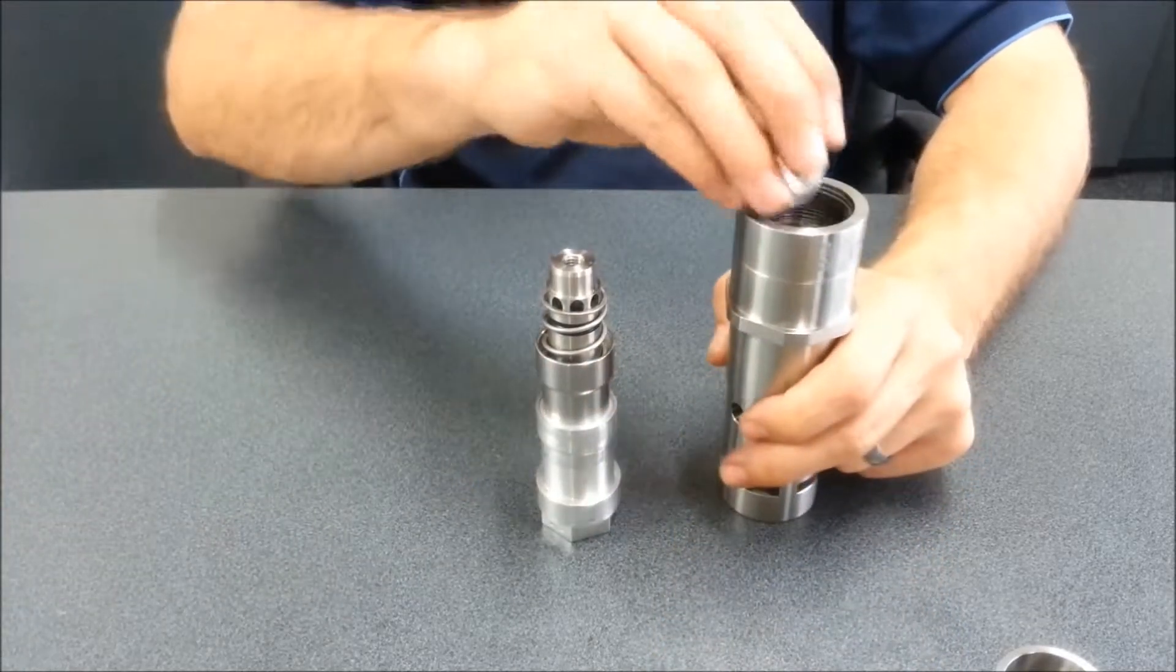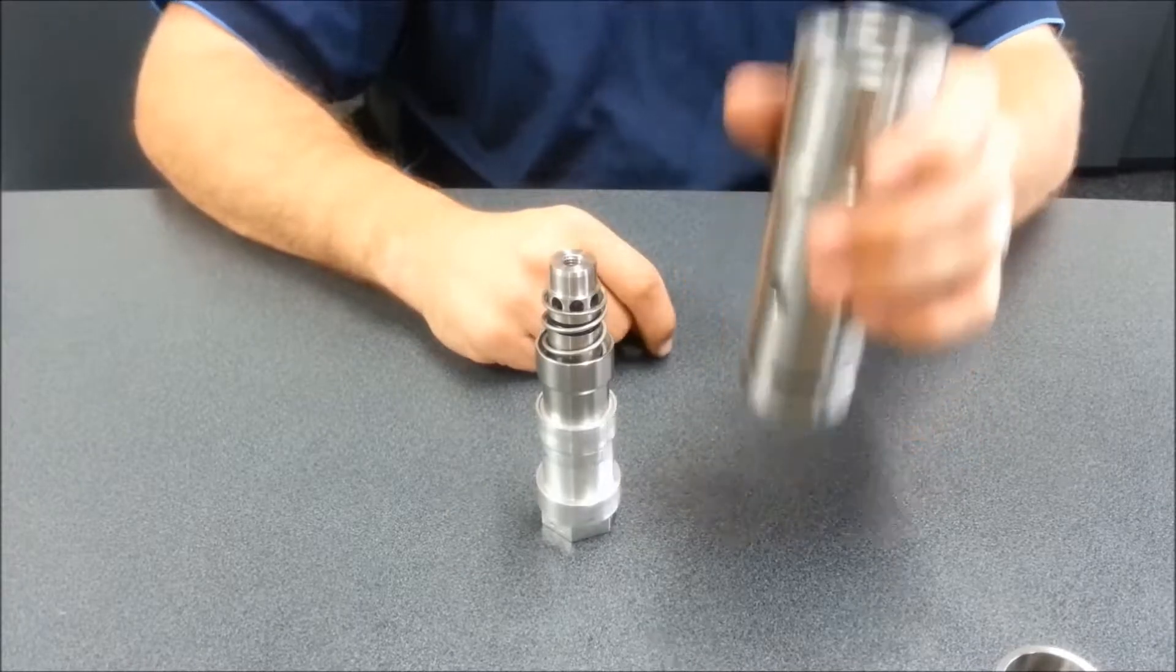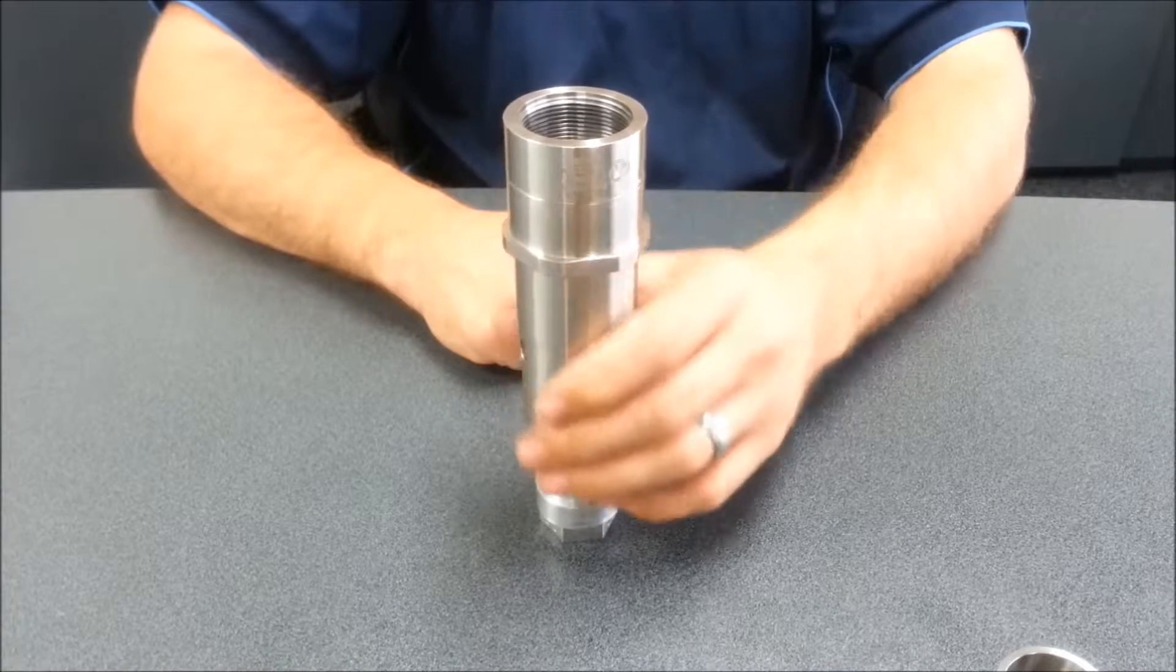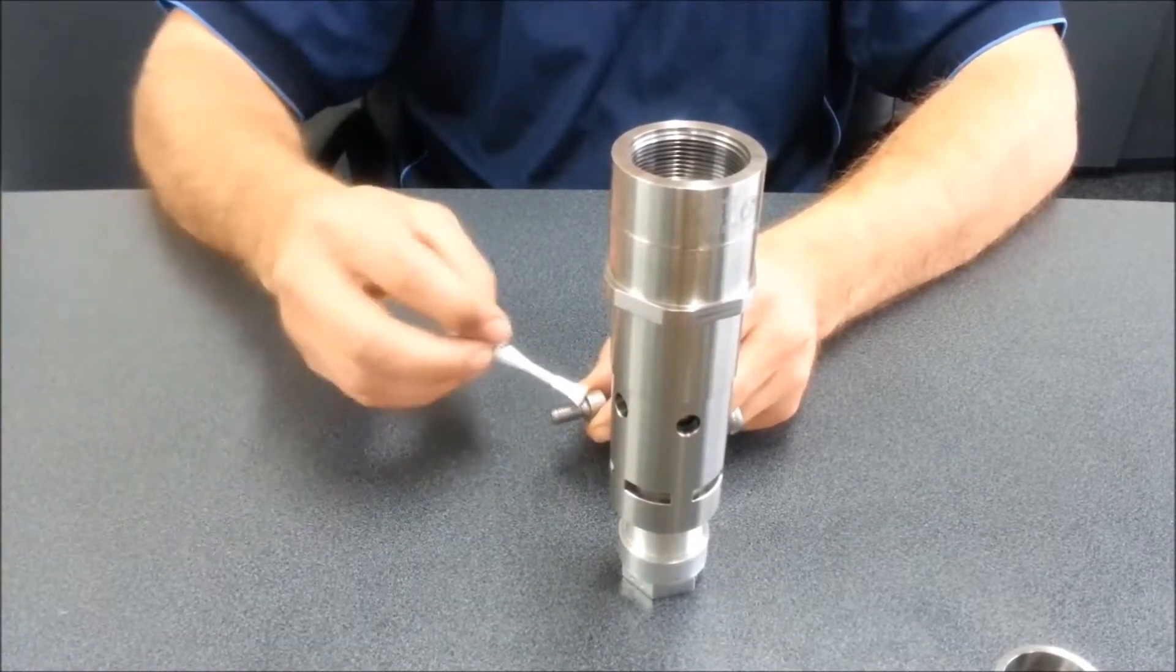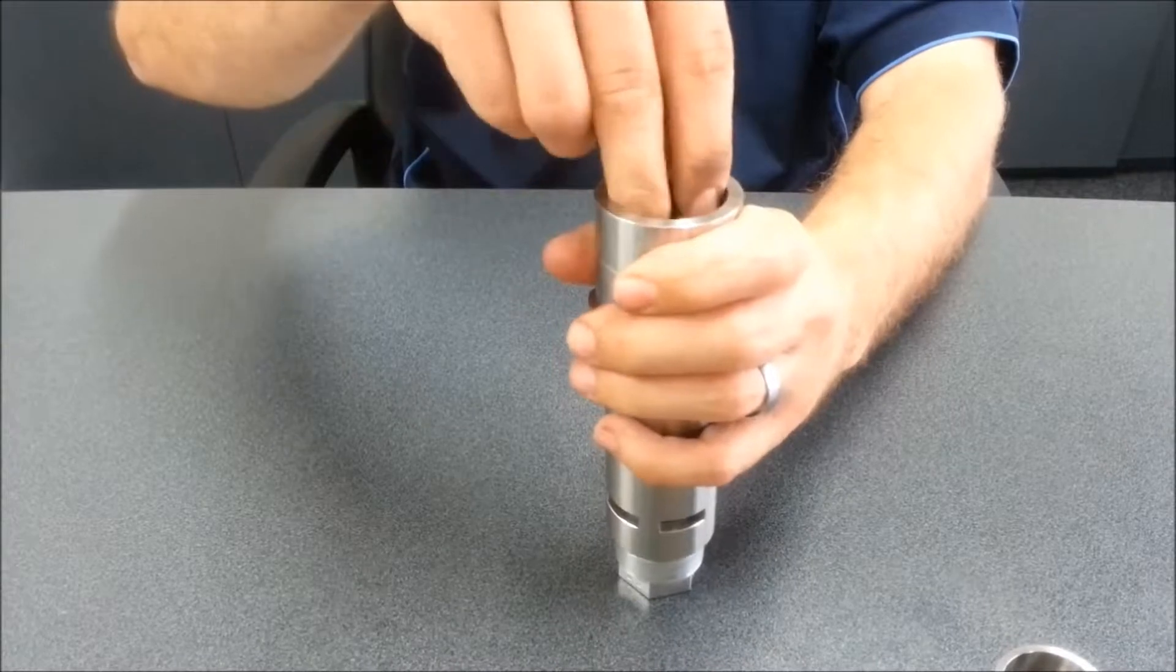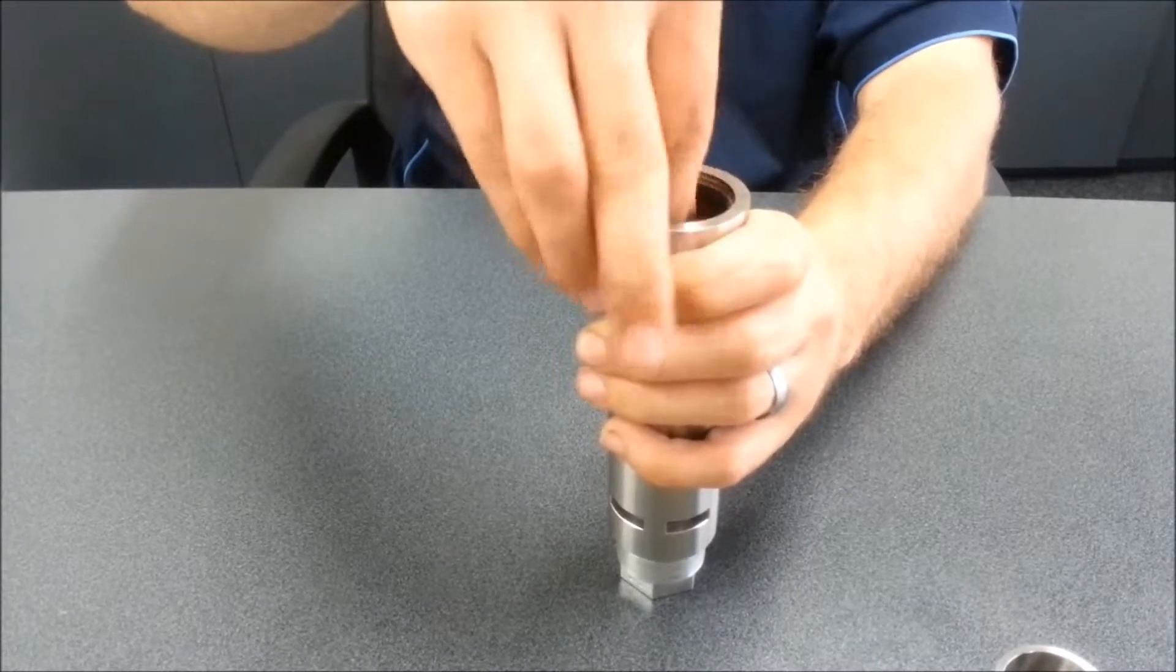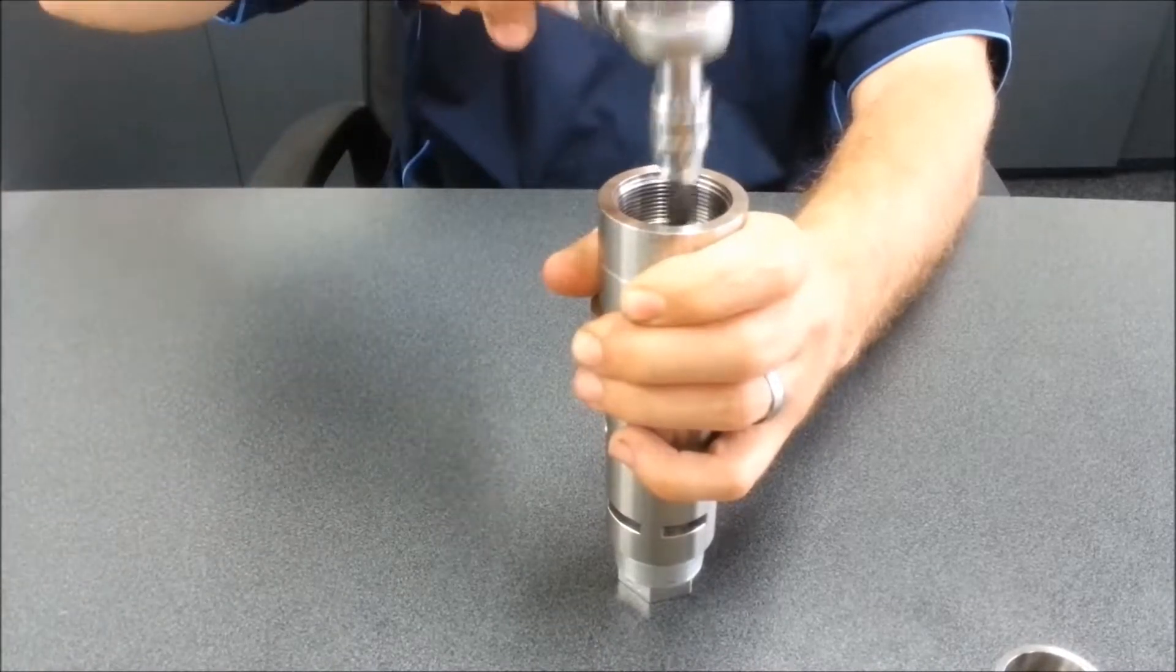Place the main poppet seal into the body and place the body over the poppet. Apply loctite to the cap screw. Hold down the body over the poppet with one hand and screw in the cap screw to the poppet. Torque to nine newton meters.